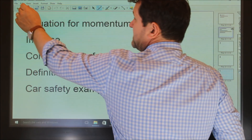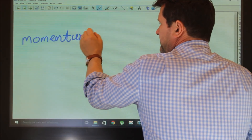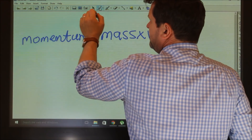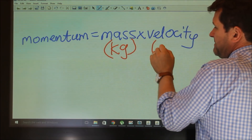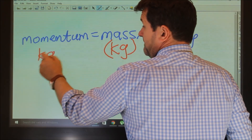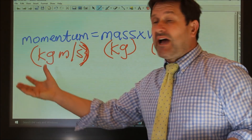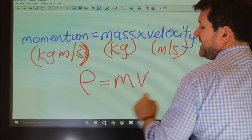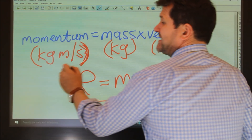So we'll get started with the equation for momentum. Momentum equals mass times velocity. Because mass is measured in kilograms and velocity is measured in metres per second, momentum doesn't have its own unit like newtons — it's measured in kilogram metres per second. It is derived from mass and velocity. You must remember, it really is important to remember, the unit is kilogram metres per second.